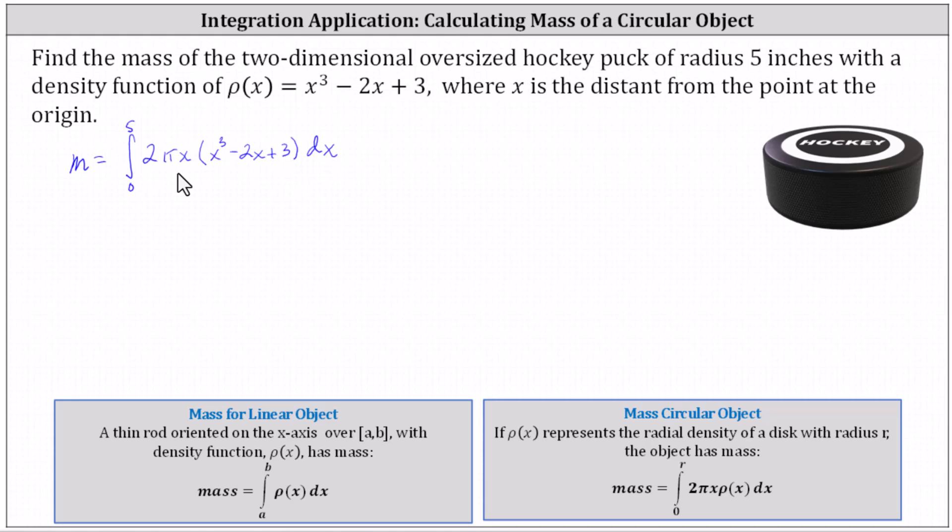Let's factor out the 2π and distribute the x, which gives us 2π times the integral from zero to five of x⁴ - 2x² + 3x dx.